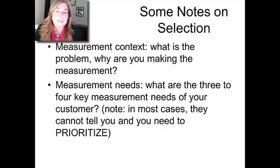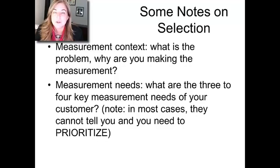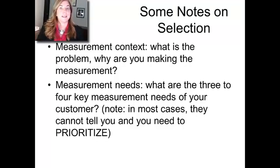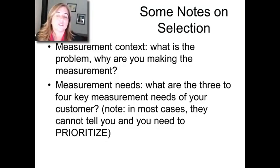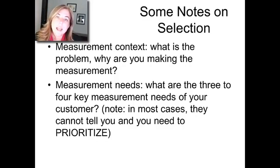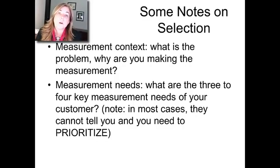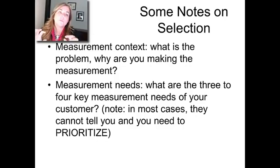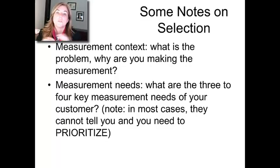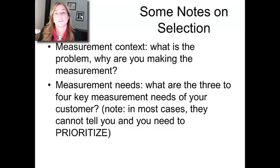The second thing are the measurement needs. What are the three to four key measurement needs of your customer? One of the really tough things to recognize is they're not going to be able to tell you. Usually you've been hired because you're supposed to be the chemist. They might be able to give you a budget, but beyond that they're not going to be a lot of help. You're going to have to learn how to prioritize and decide what's really going to matter long term. Defining the context captures the essential features of the situation, and the measurement needs drill down to more specifics that connect you to the choices you're going to make.